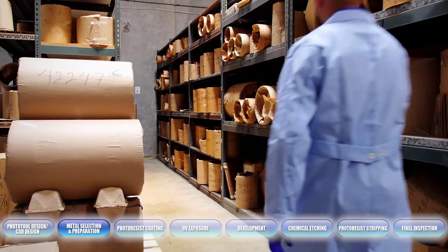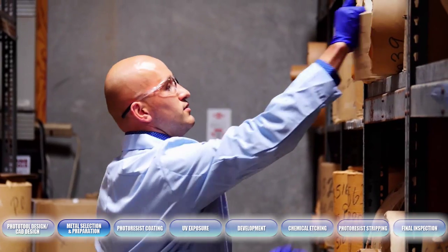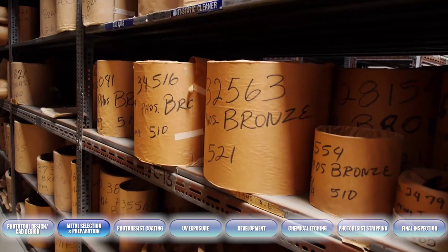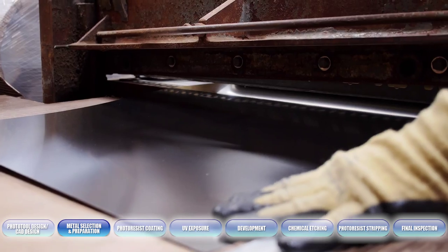The next step in the process is selecting material. We work with a wide variety of metals including copper alloys, stainless steel, aluminum alloys or nickel alloys. The material is then cut into sheets.